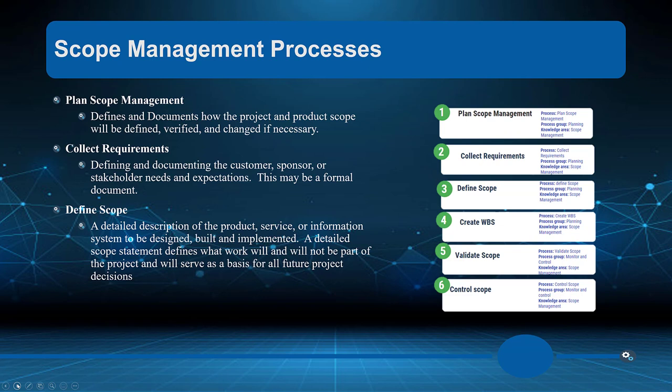The idea is breaking the entire scope down into scope packages that include the most minute process, feature, or functionality we want. When we say we want the functionality of a database, that means breaking it down into tables and processes the database will incorporate. We collect requirements from the customer, sponsor, and stakeholders — the more we plan, the better we'll execute, because jumping straight into the project is where scope creep comes from.